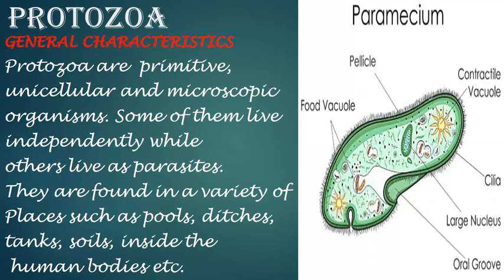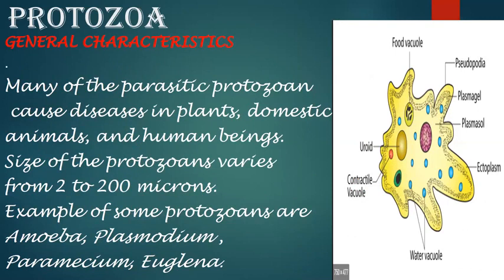Let's come to another micro-organism: protozoa. Protozoa are primitive, unicellular and microscopic organisms. Some of them live independently while others live as parasites. They are found in a variety of places such as pools, ditches, tanks and soil. Many of the parasitic protozoa cause disease in plants, domestic animals and human beings. The size of protozoa varies from 2 to 200 microns.